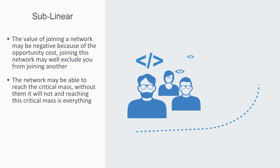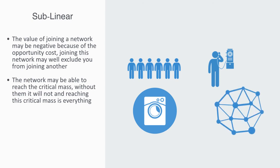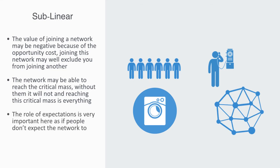A key parameter here is how much of the value of using this system is in the components versus the connections. So if there is value inherent to the product without connecting it — such as would be the case for a washing machine — then early adoption is not very difficult. But other things are very much dependent upon their connections, such as the telephone, where it would be very difficult to get the original users because there is no value in the system without the existence of others to connect to. The role of expectations is very important here, as if people don't expect the network to grow, they will not join and it will not reach critical mass. If their expectations are positive, then it may well reach this critical mass.